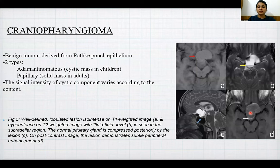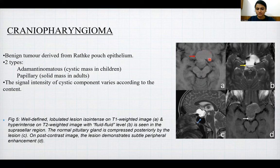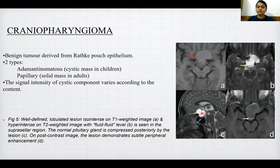Craniopharyngioma: this is a benign tumor derived from Rathke's pouch epithelium. There are two types — the adamantinomatous type, which is a cystic mass in children, and the papillary type, which is a solid mass in adults. Signal intensity of the cystic component varies according to content. In this case, a well-lobulated lesion is iso-intense on T1-weighted images; T2-weighted images show a fluid-fluid level in the suprasellar region, with the normal pituitary gland displaced posteriorly. Post-contrast images demonstrate subtle peripheral enhancement.